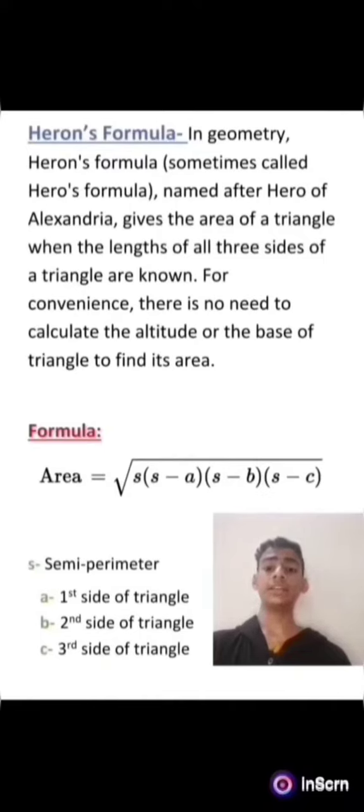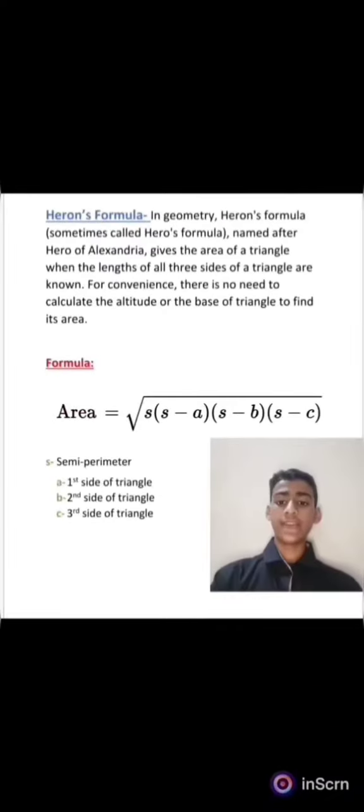To calculate the area, the formula is the square root of s(s-a)(s-b)(s-c), where s stands for semi-perimeter or half of the perimeter of the triangle, a is the first side of the triangle, b is the second side, and c is the third side of the triangle.